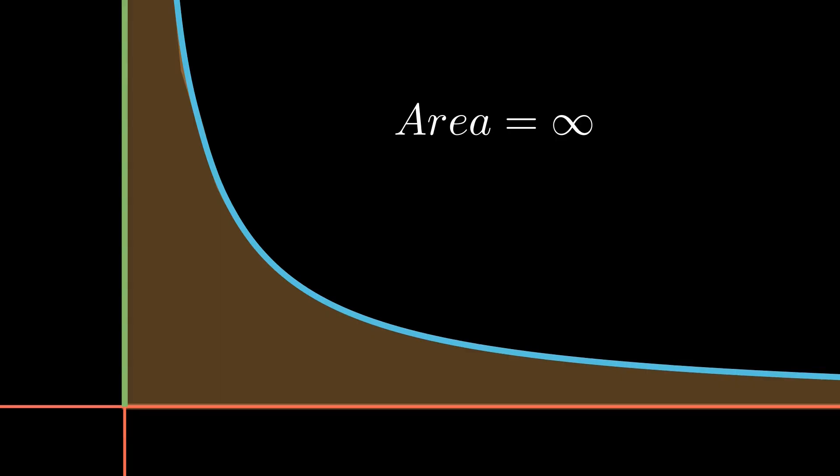Is there a way we can split this area perfectly in half? Is there a vertical line we can draw at some value, x equals q, such that the area to the left of q and the area to the right of q are equal?